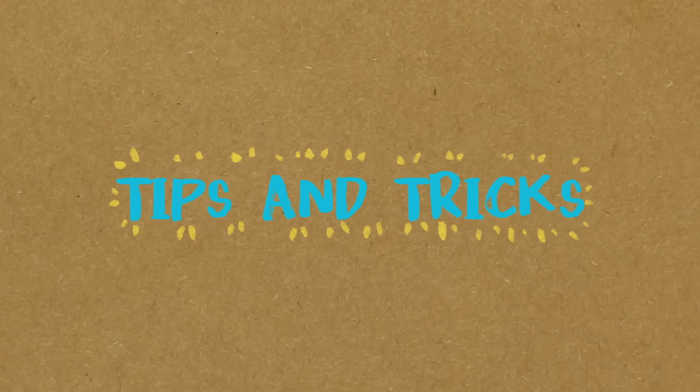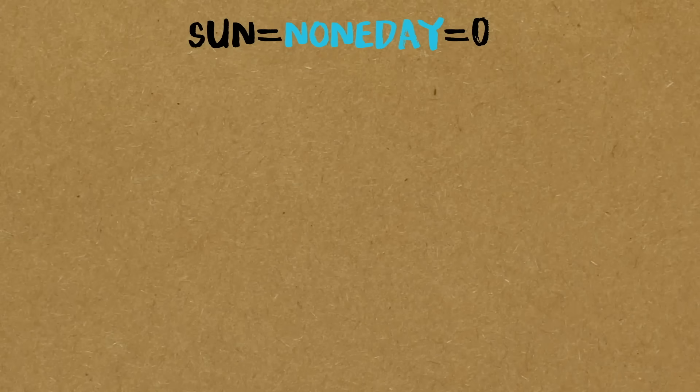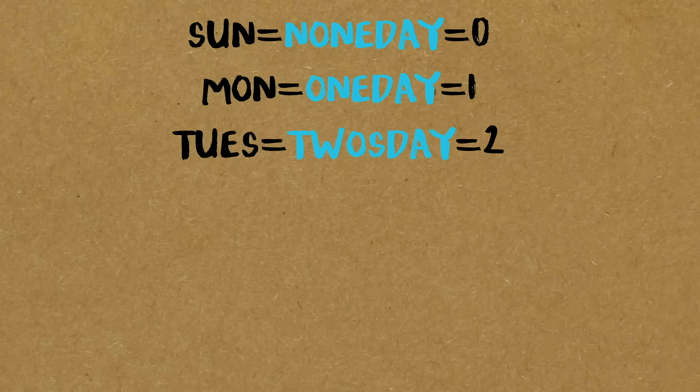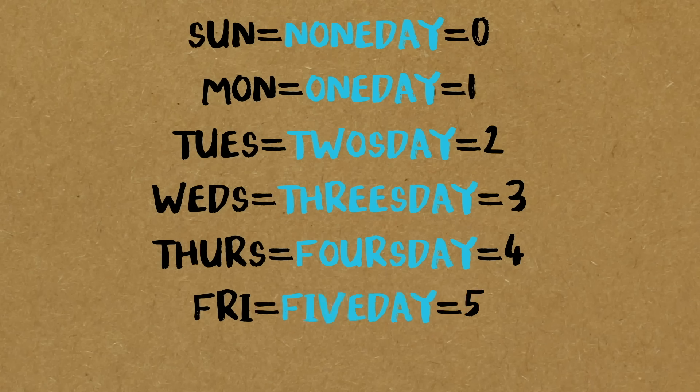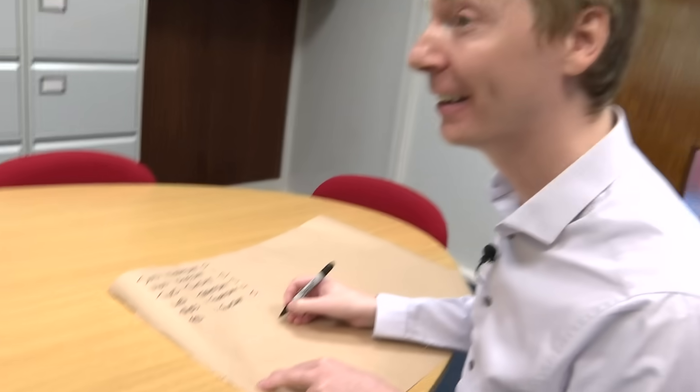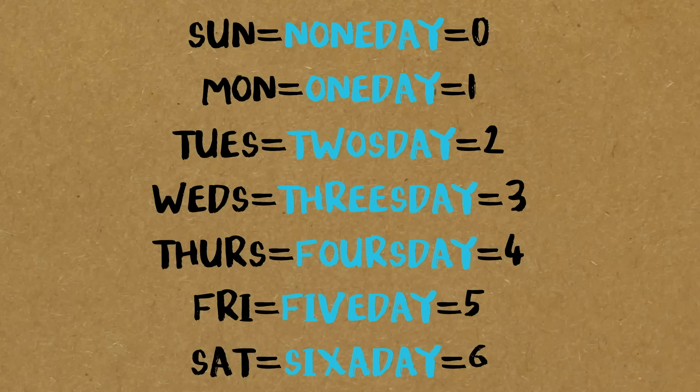You can do this calculation — you get better at it with practice. One tip is to convert the days of the week into numbers, because then it just turns the calculation into a sum. Sunday is zero — non-day. Monday is one — one day. Tuesday is two — two-sday. Wednesday is three — threes-day. Thursday is four — four-sday. Friday is five — five-day. Saturday is six — six-a-day. So now when I'm doing the calculation, it is just a sum, and then I convert back to the day of the week.